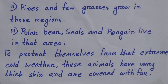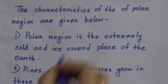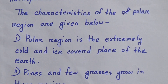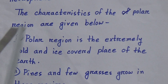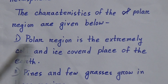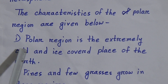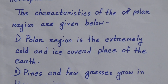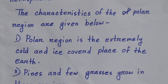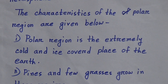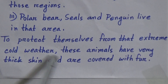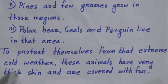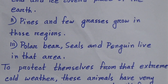Let me read this again. The characteristics of the polar region are: it is an extremely cold and ice-covered place on the earth; pines and few grasses grow in these regions; polar bears, seals, and penguins live in that area; to protect themselves from the extreme cold weather, these animals have very thick skin and are covered with fur.